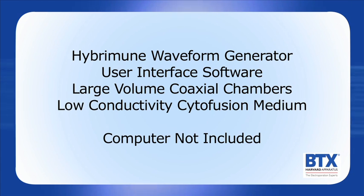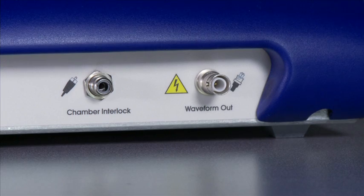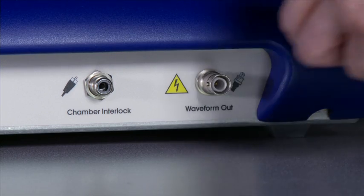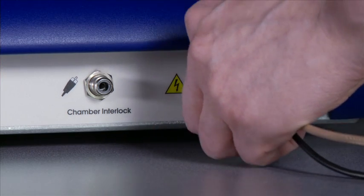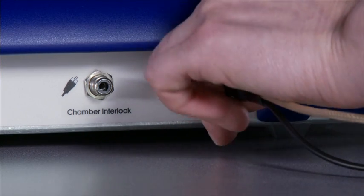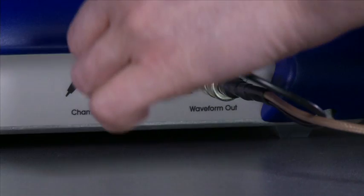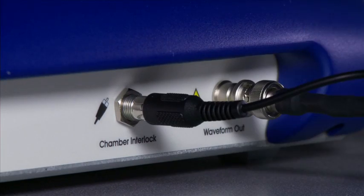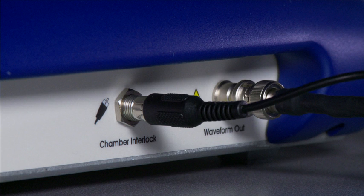A computer is required for the application software but is not included in the system. There are two connections made with this cable assembly. Connect the SHV-type coaxial plug to the jack labeled waveform out, then connect the RCA-type phonoplug to the jack labeled chamber interlock. Generally, this cable only needs to be connected at the time that a chamber is to be used.